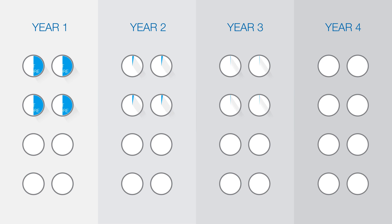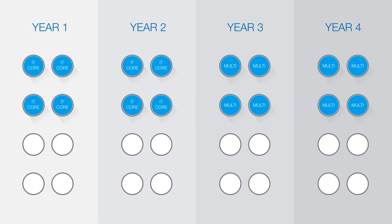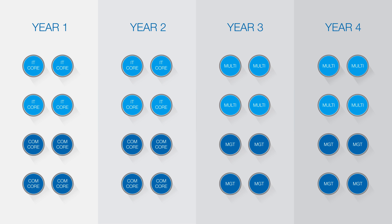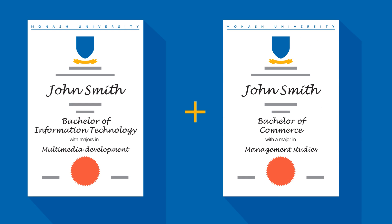So you would take 16 units in Information Technology, including eight units for your major. You use all your electives to take the major in your second degree — in this example, management in the Bachelor of Commerce. You will also study all the minimum numbers of commerce units needed for that course. You graduate with two degrees, each with a major study area.